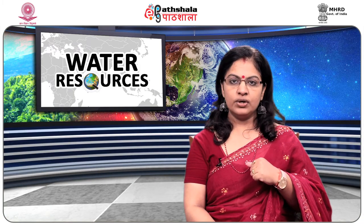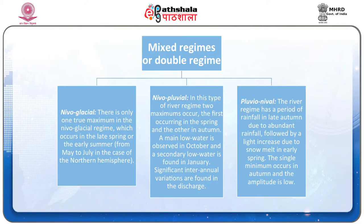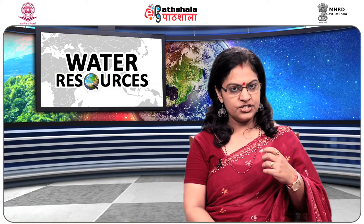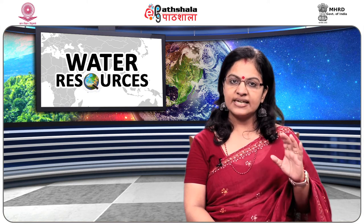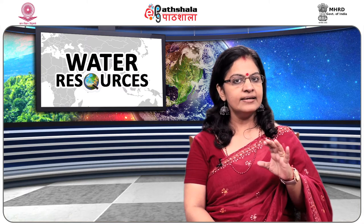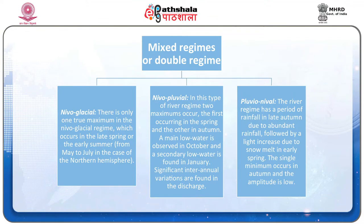Mixed regimes, or double regimes. In the nivo-glacial regime, there is one true maximum occurring in late spring or early summer (May to July in the northern hemisphere), with relative diurnal variations during the hot season and significant yearly variation — but less than in the snow regime. In the nivo-pluvial type, two maximums occur: the first in spring and the other in autumn. A main low water is observed in October and a secondary low water in January, with significant inter-annual variations.